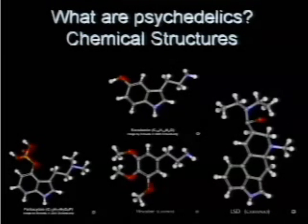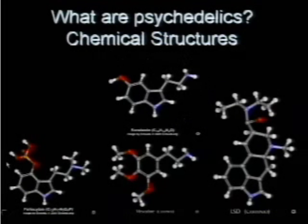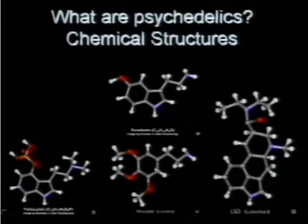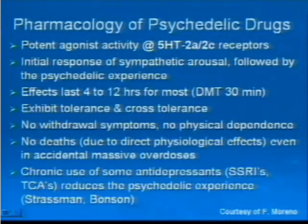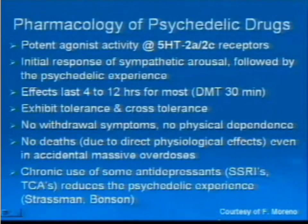This slide should give some of you flashbacks to organic chemistry. What we're looking at here is the chemical structure of serotonin, one of the endogenous neurotransmitters. This is the chemical structure of psilocybin, and it's not hard to see the homology between the two chemicals. If you squint your eyes a little bit, you can look at mescaline and see the same six-carbon ring with the branching chain. And if you squint really hard and look at LSD, you can see the homology as well. All of these drugs are potent agonists at the serotonin 2A and 2C receptors. The initial response after ingestion is sympathetic arousal followed by the actual psychedelic experience. The effects of most of these drugs last anywhere from 4 to 12 hours, with the exception of DMT, which lasts about 30 minutes, and 5-methoxy-DMT, which lasts even shorter — about 10 to 15 minutes for the peak experience.